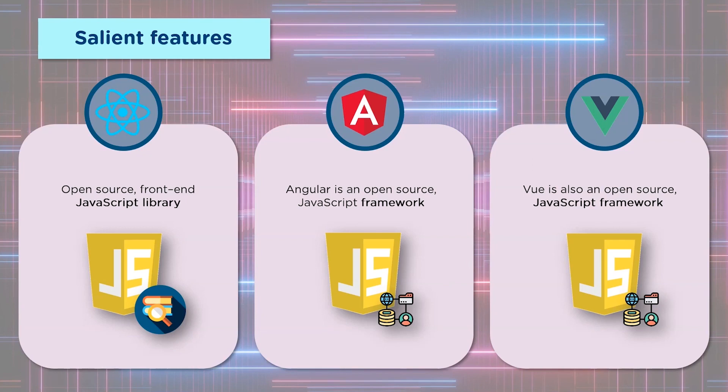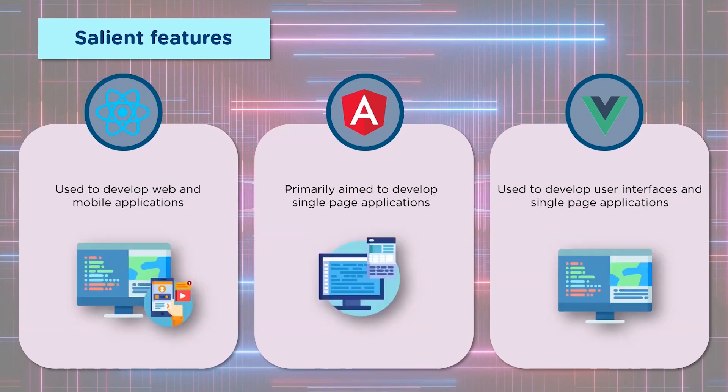JavaScript being an interpreted language — where code is executed line by line — makes all these tools very efficient, mainly because converting the code into intermediate code would require a runtime environment and would encounter a delay. These are avoided and as a result, these tools are fast.